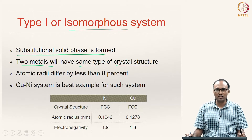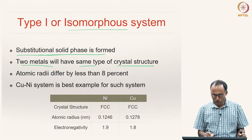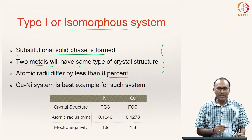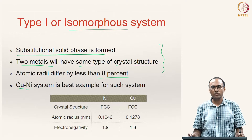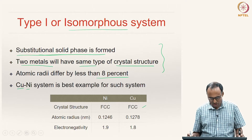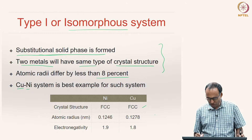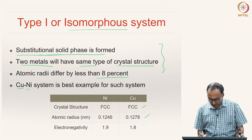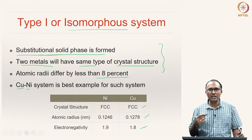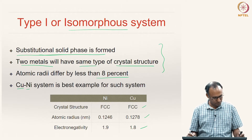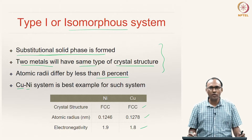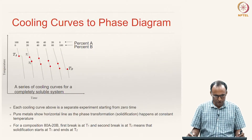All our isomorphous systems are substitutional solid solutions. We will have a substitutional solid phase, and because it has 100 percent solubility according to Hume-Rothery rules, both metals should have the same crystal structure, and the atomic radii difference should be less than 8 percent. A very good example of an isomorphous system is the copper-nickel system — both have FCC crystal structure, atomic radii of 0.1246 nm and 0.1278 nm (less than 8 percent difference), and very close electronegativity values.